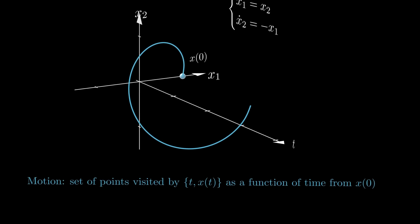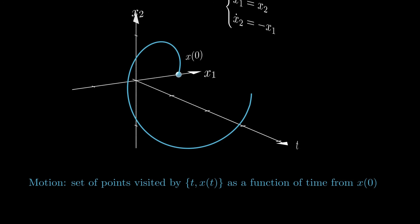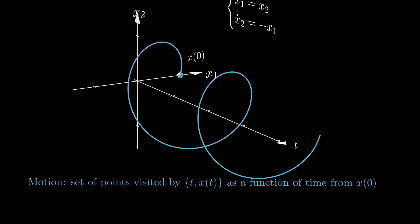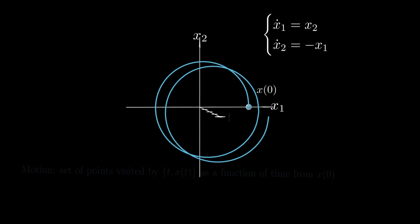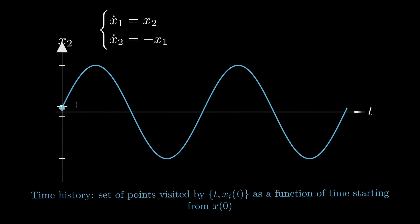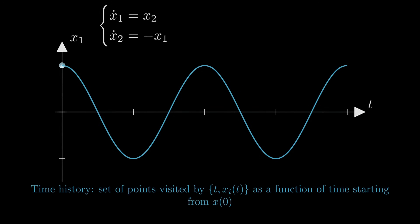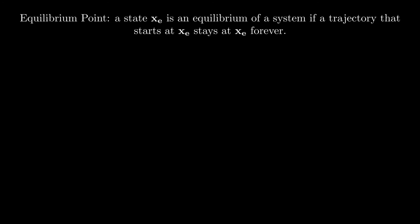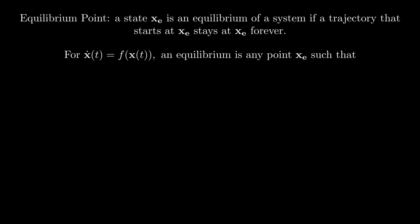It is important to realize that motions, trajectories, and time histories are all related to one another. Different motions may have the same trajectory. For instance, the motion for time going from 0 to π has the same trajectory as the motion for time going from 0 to 2π. If we project the motion over the x2-t plane, we obtain the time history of x2. If we project the motion over the x1-t plane, we obtain the time history of x1. The final important concept to introduce is that of equilibrium point: a state xe is an equilibrium if a trajectory that starts at xe will stay at xe forever.